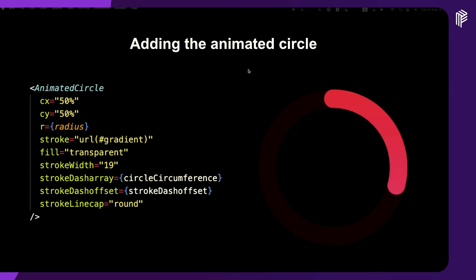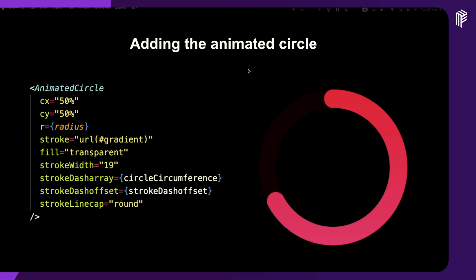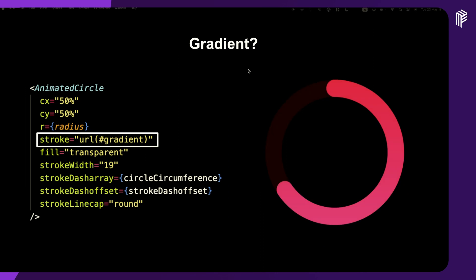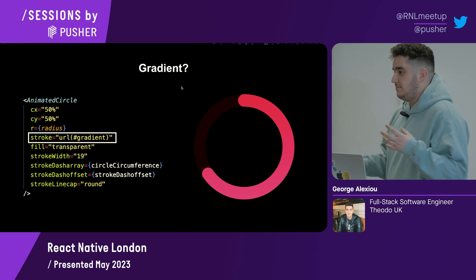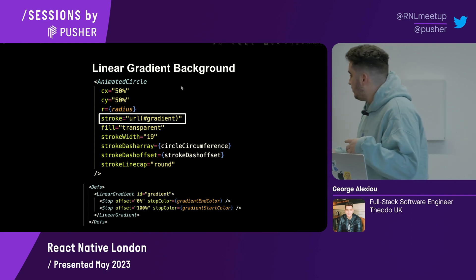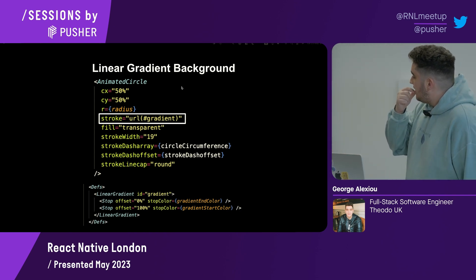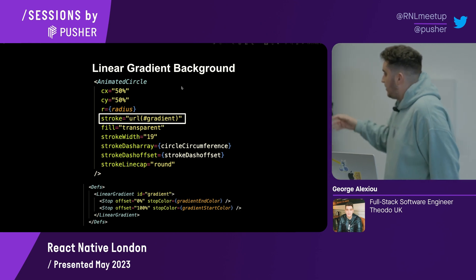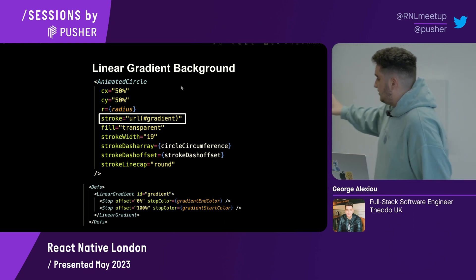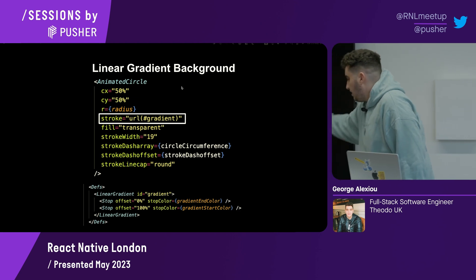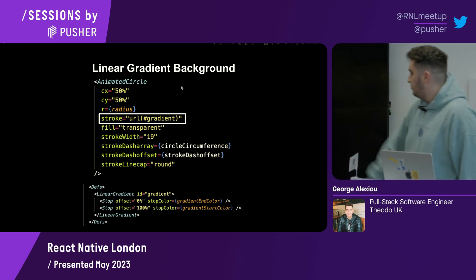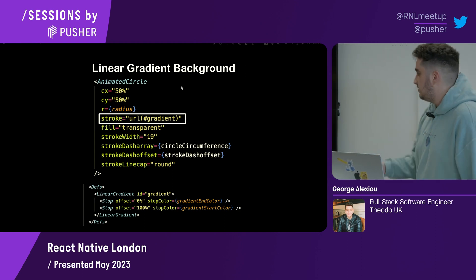Here you can see I've defined things like the stroke and the fill. One important thing: this is a gradient, and the way I've done this is through a URL reference in the stroke. SVG allows us to declare reusable definitions that we can pass into other components. Using the defs component, I've defined a linear gradient with the colors, and then through its ID I pass it through to the stroke in the animated circle to render the gradient.